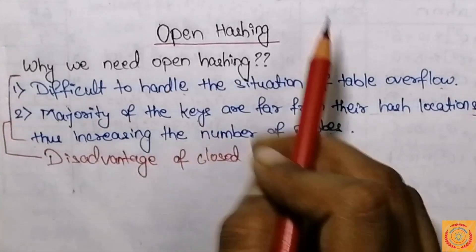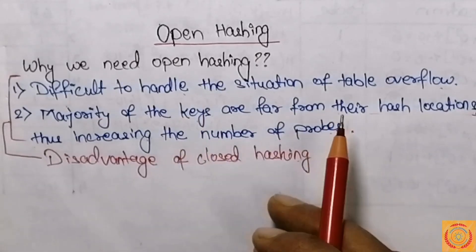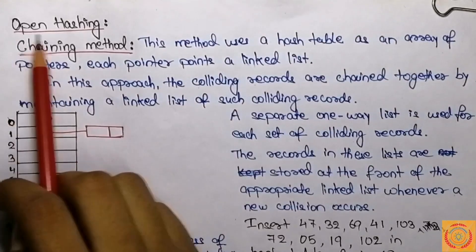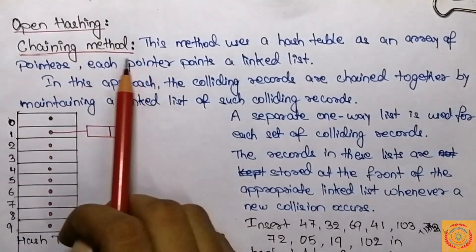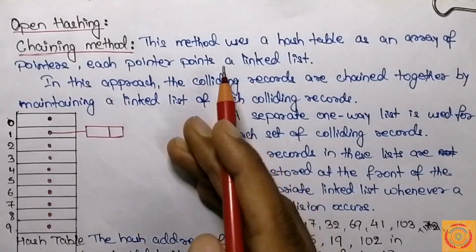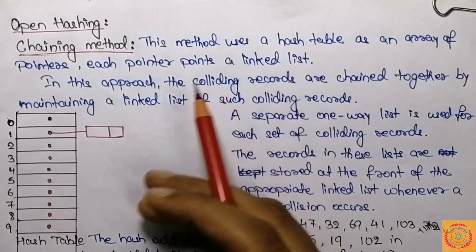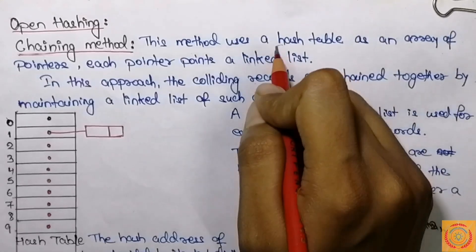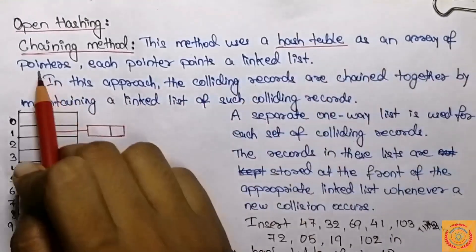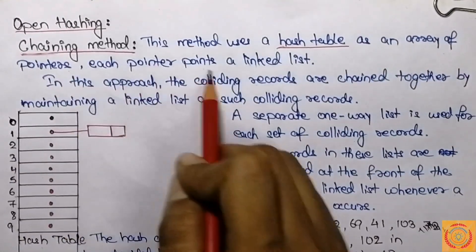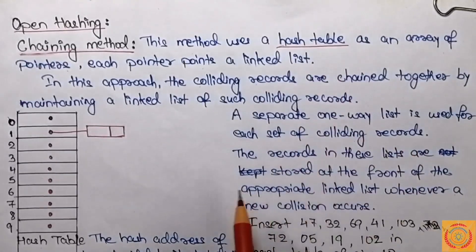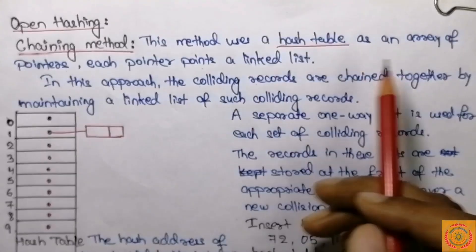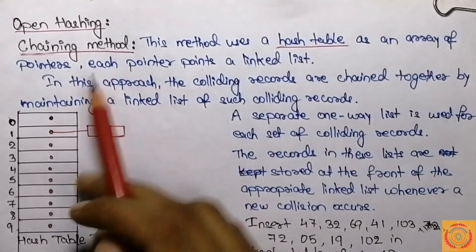Open hashing is also known as separate chaining or simply the chaining method. This method is one of the most efficient methods of handling colliding records. The chaining method uses a hash table as an array of pointers, and each pointer points to a linked list.